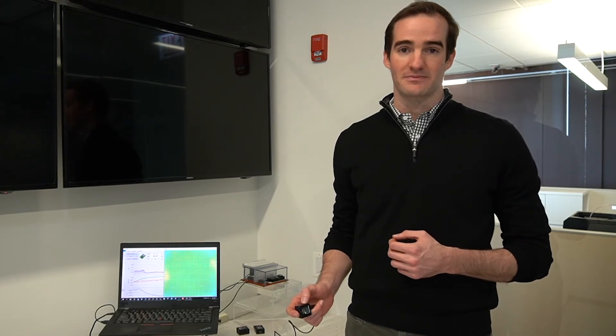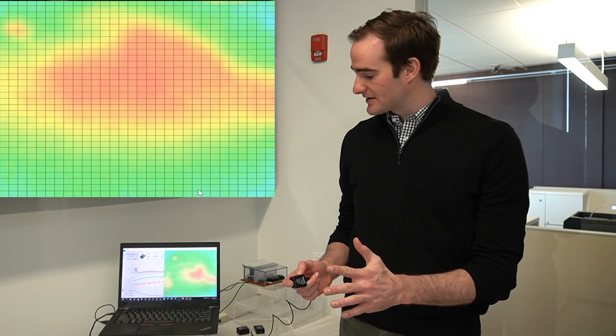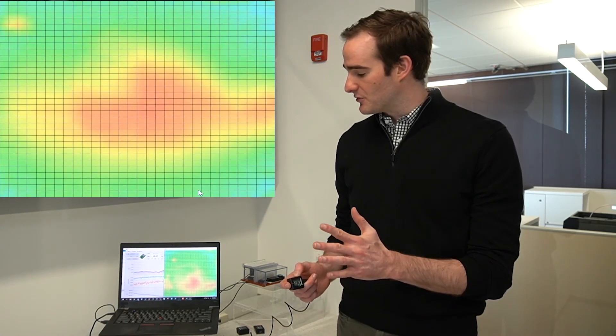Here I'd like to demonstrate the effectiveness of the D6T sensor using the 32x32 module. As you can see on the screen, the sensor is able to detect those changes in temperature in real time with accuracy and reliability. As I wave my hand in front of the sensor, you can see and detect those high changes in temperature, so the sensor can easily detect for human presence.